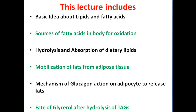This lecture covers basic ideas about lipids and fatty acids, and sources of fatty acids in the body for oxidation. When energy is required, fat is taken either from dietary fats or extracted from adipocytes in adipose tissue. The mechanisms of absorption of dietary lipids and mobilization of stored fat are covered, along with how glucagon activates stored fat from adipocytes, and how triacylglycerol is hydrolyzed into fatty acids and glycerol for energy production.